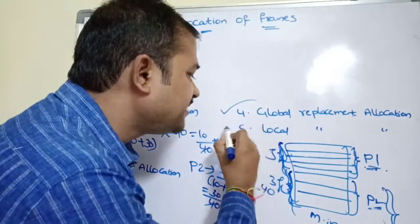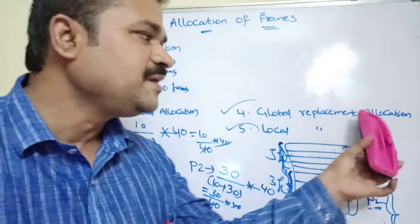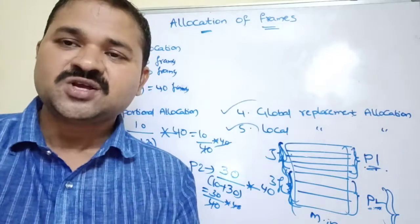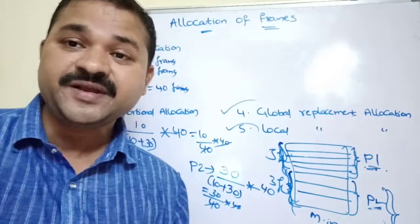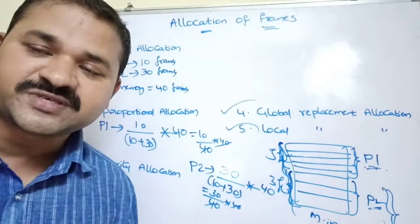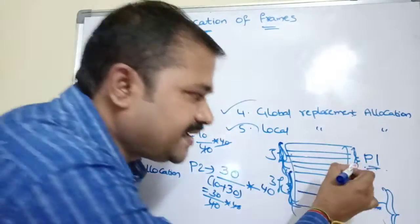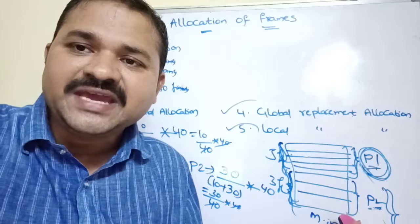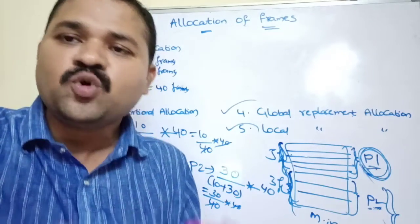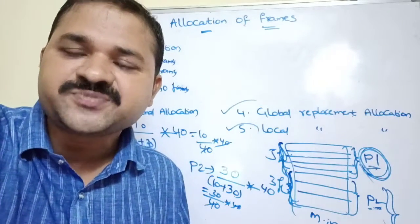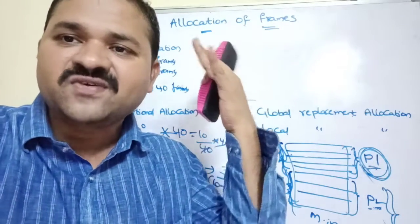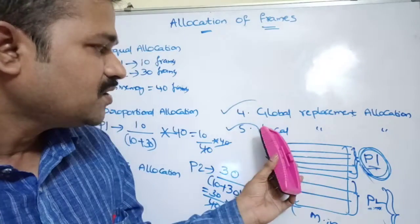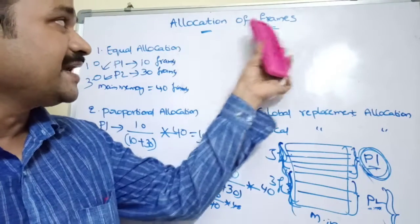Among global replacement allocation and local replacement allocation, global replacement allocation is the better one — it produces better throughput and better output than local replacement allocation. In global replacement allocation, one process's pages can be stored in another process's frames, so the number of frames allocated to a process can increase. A high priority process can take frames from a lower priority process, gaining more frames and reducing its page fault rate. So global replacement allocation produces better throughput than local replacement allocation.